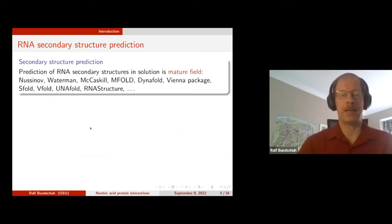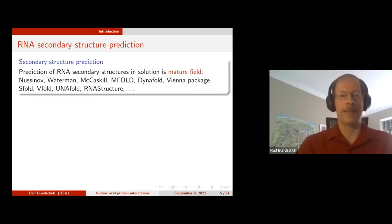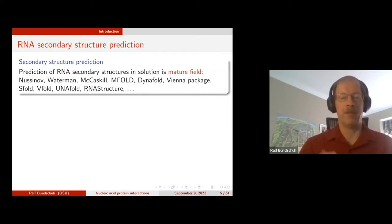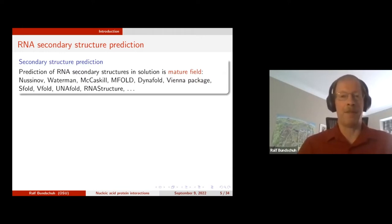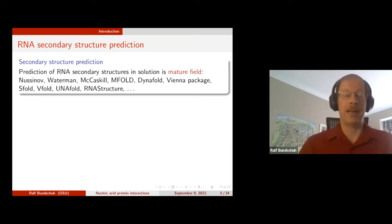Secondary structure prediction is the process where, given a sequence, you want to know the secondary structure — who pairs with whom. This is a very mature field. It started in the late 70s and has evolved a lot since then. There are many software packages that can do exactly this: given a sequence, they give you a structure. But what they calculate is the structure you would find in a test tube if the RNA is all by itself.